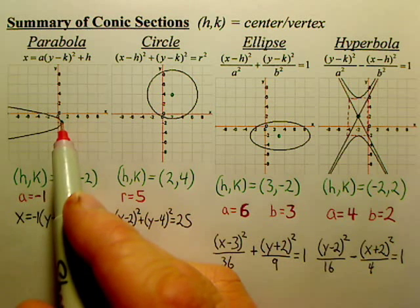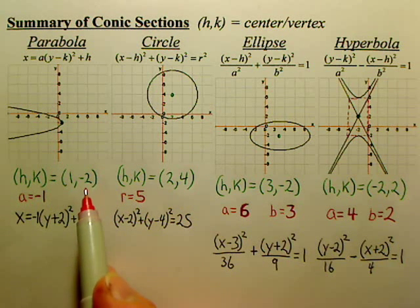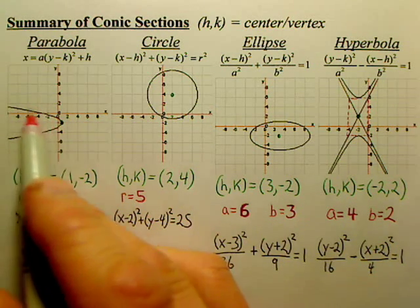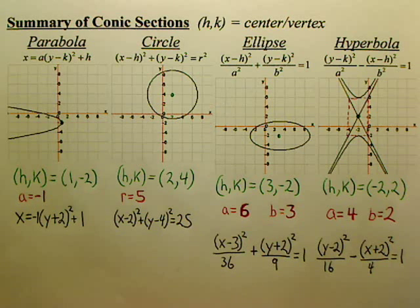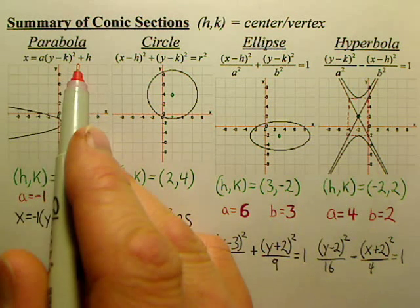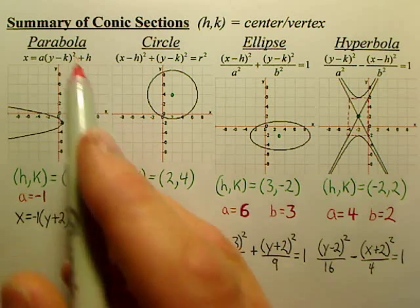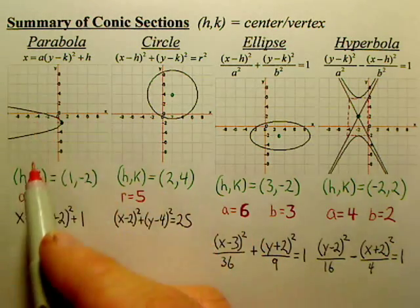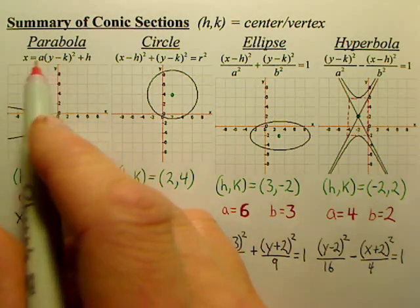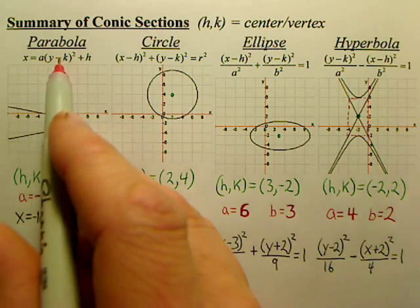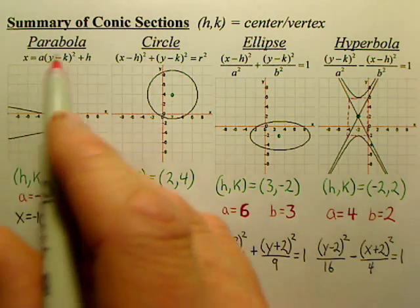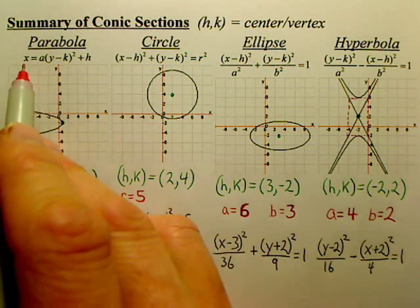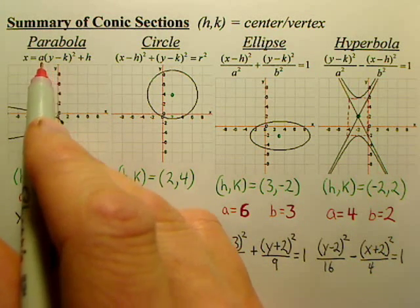If you look, that's the vertex, (1,-2). Your a value is negative 1 because of how wide or narrow that is. There's the equation that gives you the parabola. Now, since it's on a side, it's x equals. If it was vertical like that, it would be y equals. And the h and k would be flip-flopped. It would be a little bit different, but I'm not going to put every single example on this video.